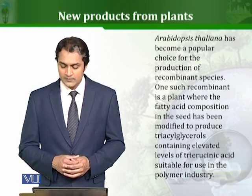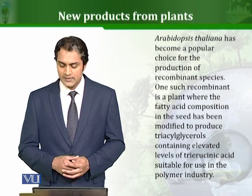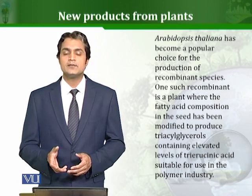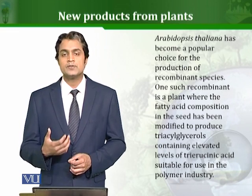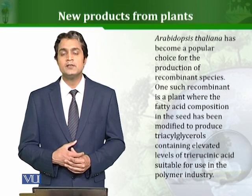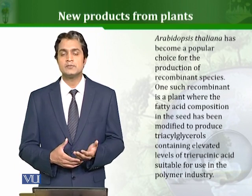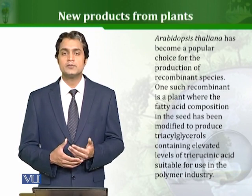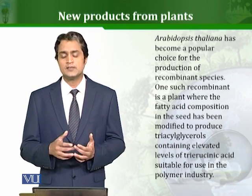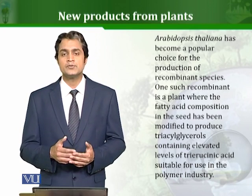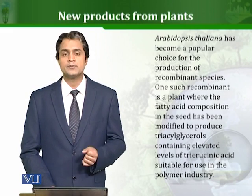One such recombinant is a plant where the fatty acid composition in the seed has been modified to produce triacylglycerols containing elevated levels of triacetin acid suitable for use in the polymer industry. Scientists studied this plant and found that it produces certain triacylglycerols which can be used to make polymers. They genetically engineered this plant to produce a much higher concentration and quantity of this polymer, which has industrial importance. So instead of producing this through an industrial process, the process could be made more economical by using plants.